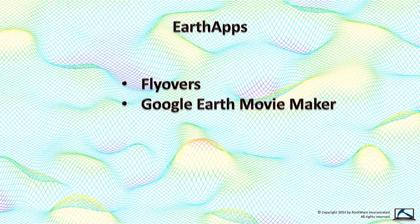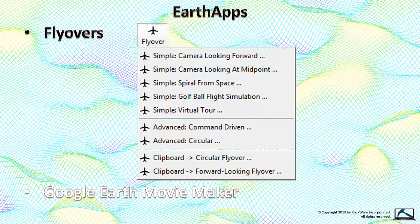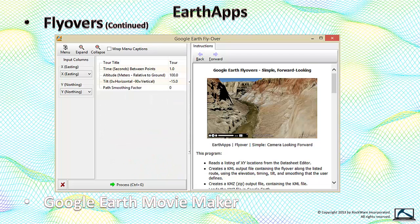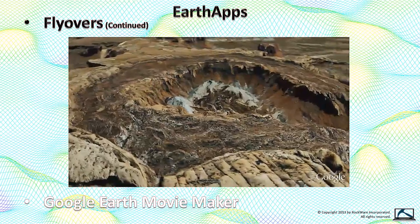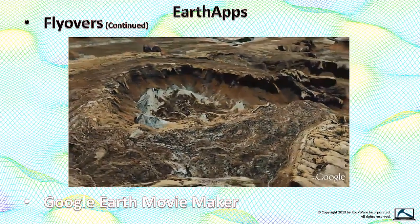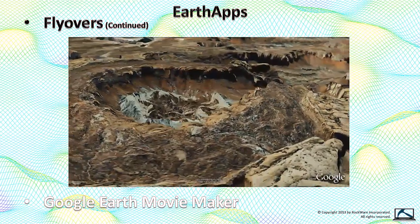The free Earth apps within RockWorks, combined with the Movie Maker option within the free Google Earth program, provide useful tools for creating very realistic animations. We start by selecting one of the flyover programs within the RockWorks Earth apps flyover menu. In this case, I've selected the simple Camera Looking Forward option, specifying the data columns that define the flight path, the altitude of the camera, and the look-down angle. Within a few seconds, we've produced a flyover circling the Upheaval Dome crypto feature in Canyonlands National Park.